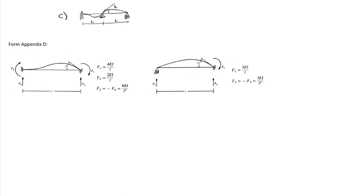I've extracted from Appendix D the relevant figures. On the left-hand side is a beam that's fixed at one end and has the other end rotate but not translate. We see right here that there's a value 1 that indicates that that's a unit rotation.